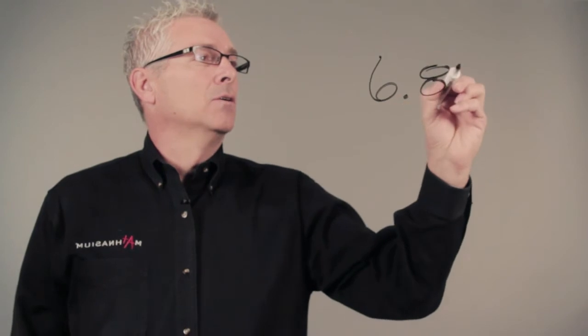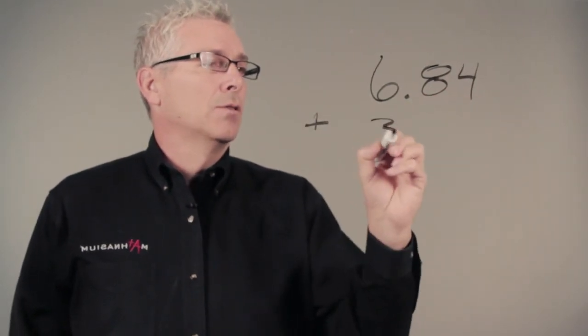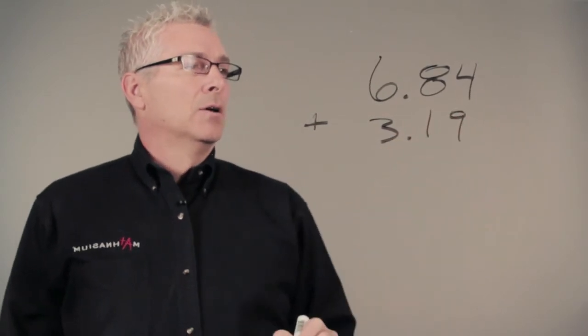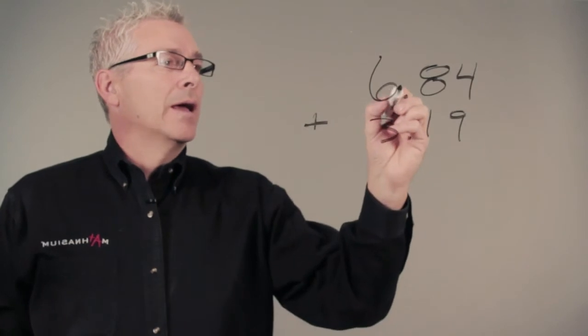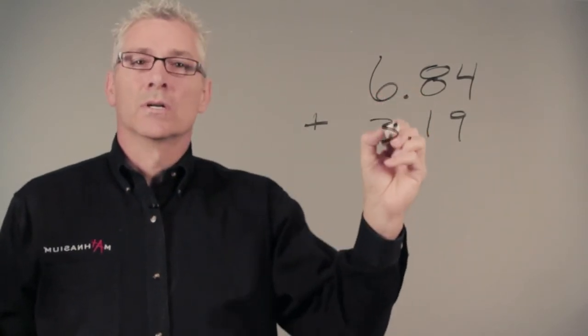So, if we are going to add 6.84 plus 3.19, the key point about adding and subtracting decimals is that you make sure you line up your decimals one on top of the other.